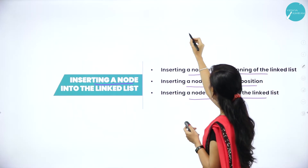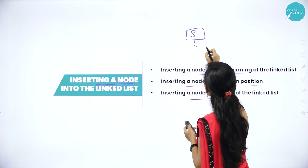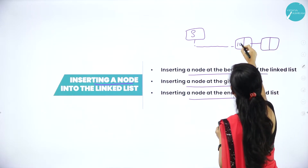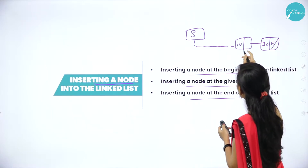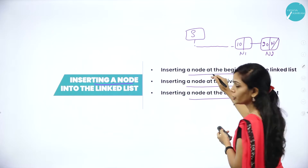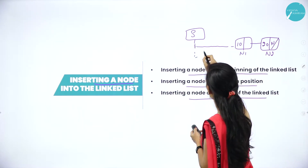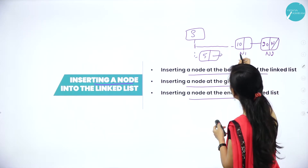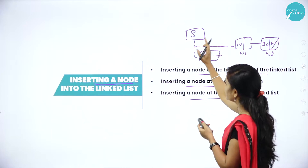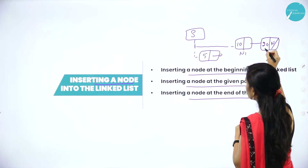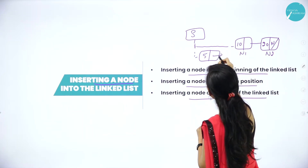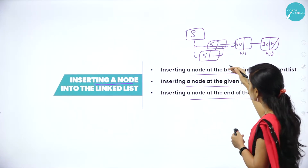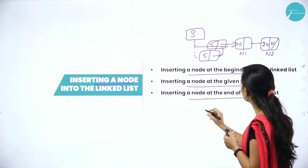Inserting a node at the beginning of the list. Here I have two nodes: node 1 and node 2. I am going to add one new item called 5. Before insertion, the first node was 10 and the second node was 20. After inserting, node 5 will become the new first node and connect to the next node.